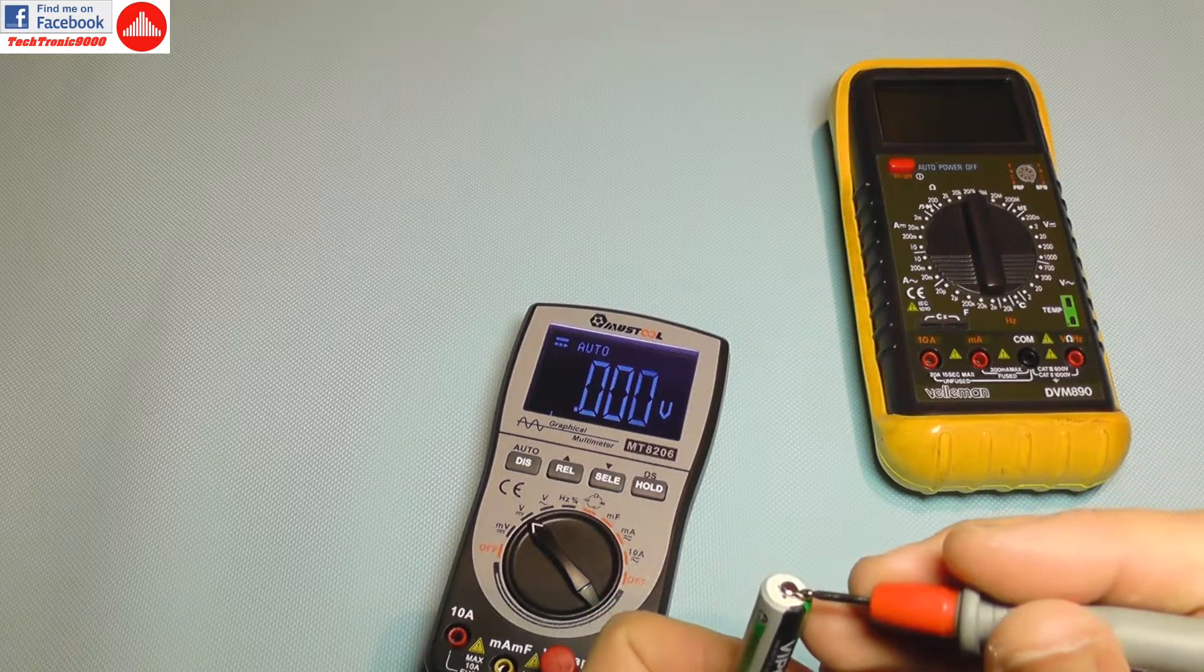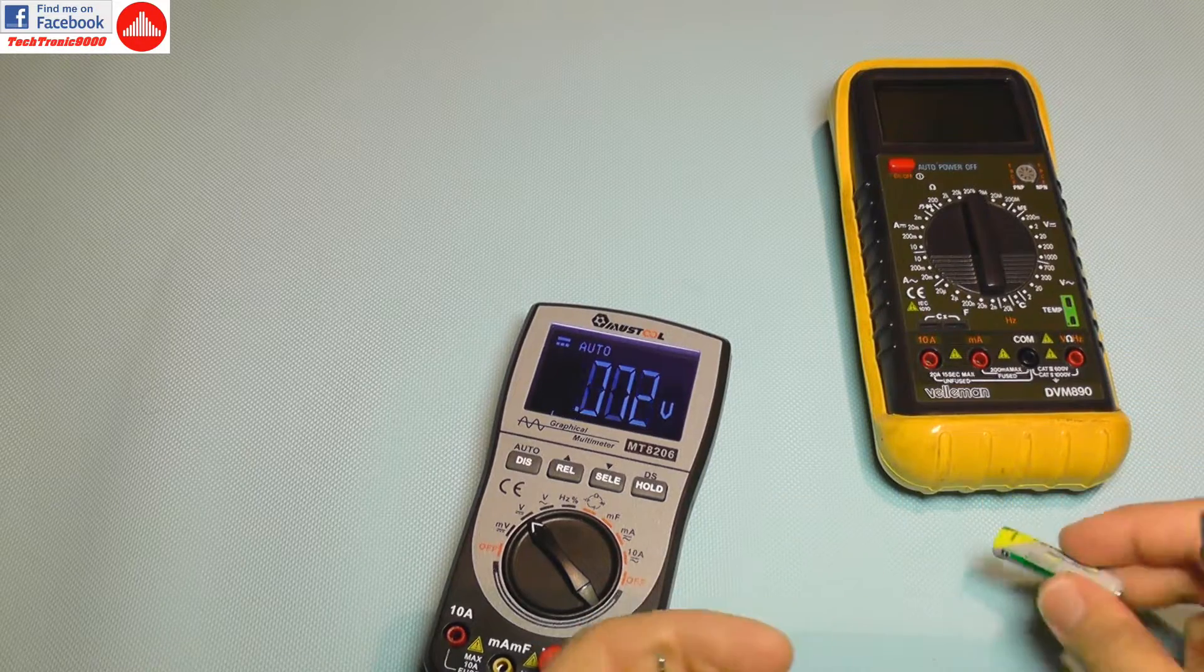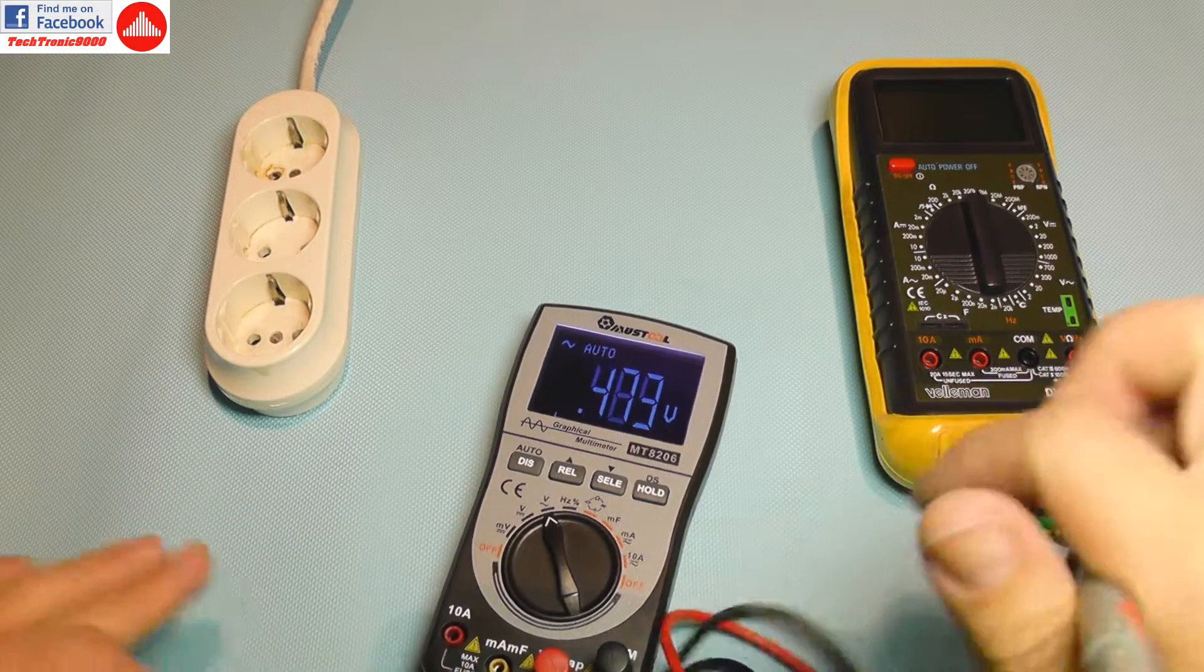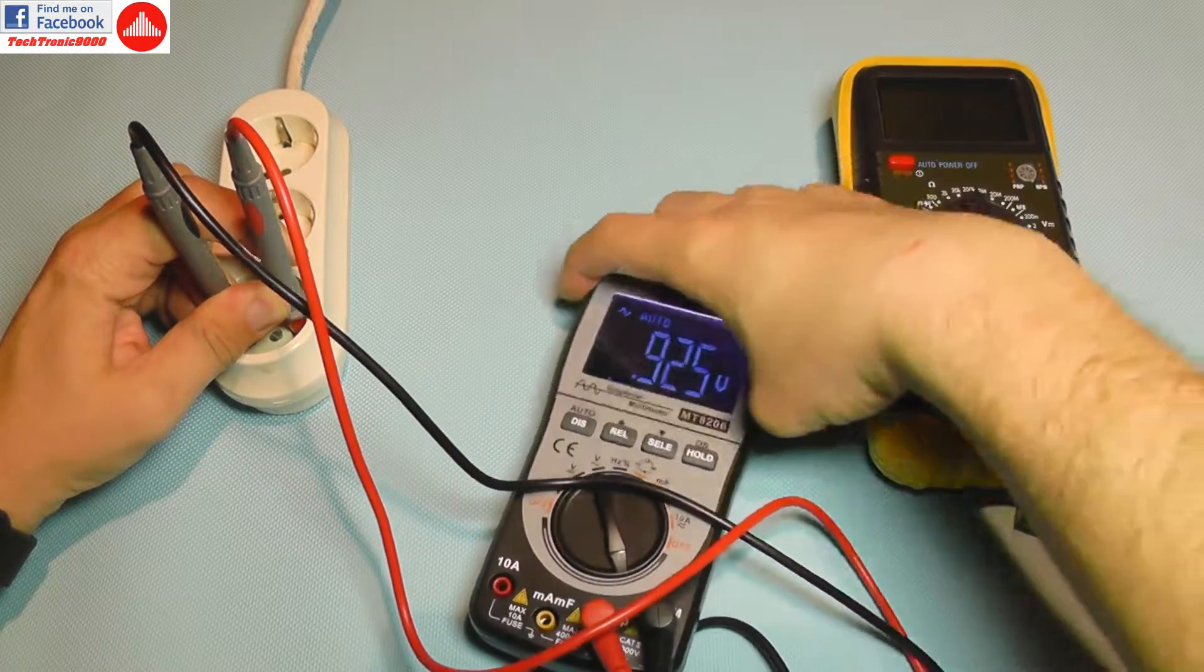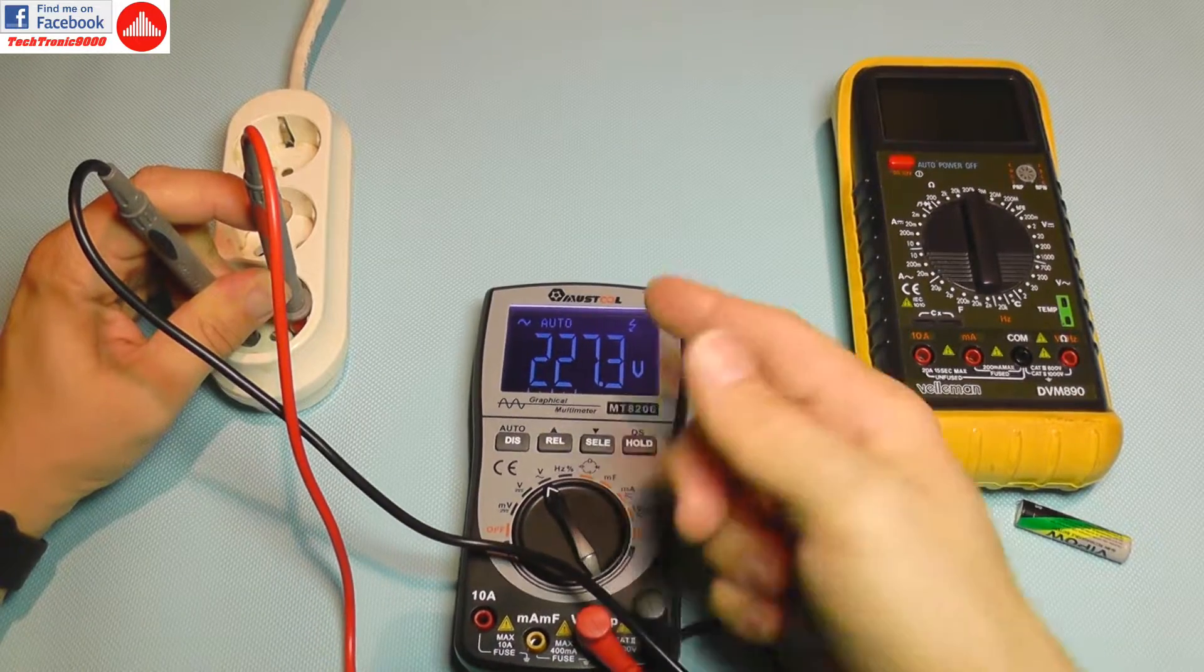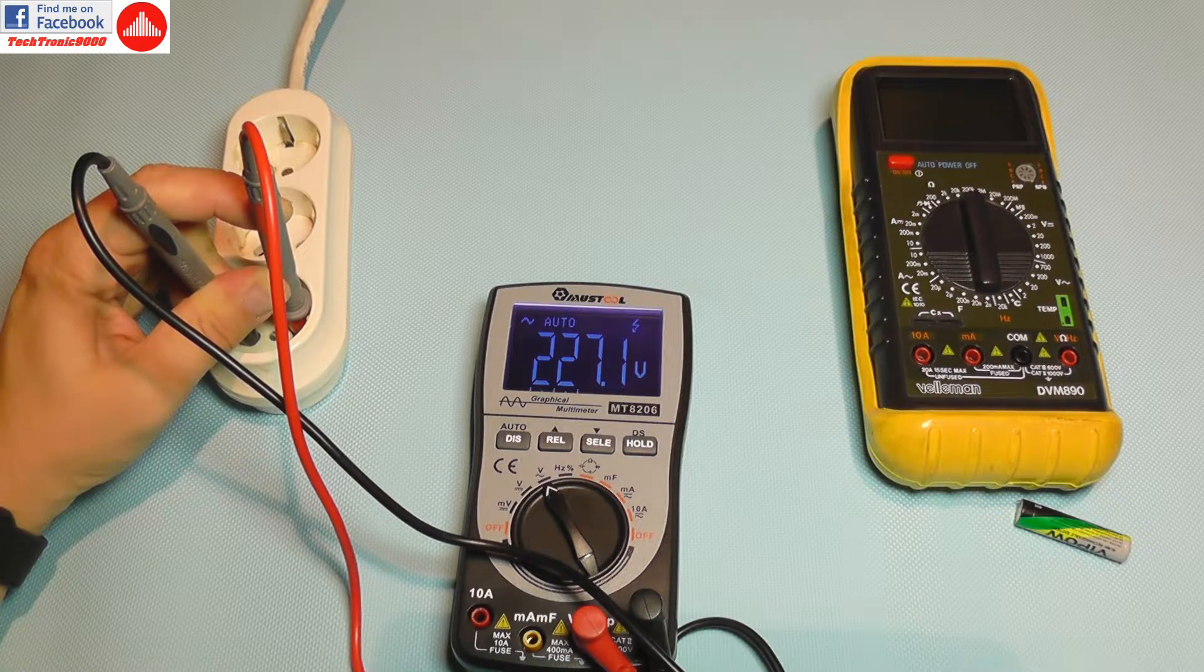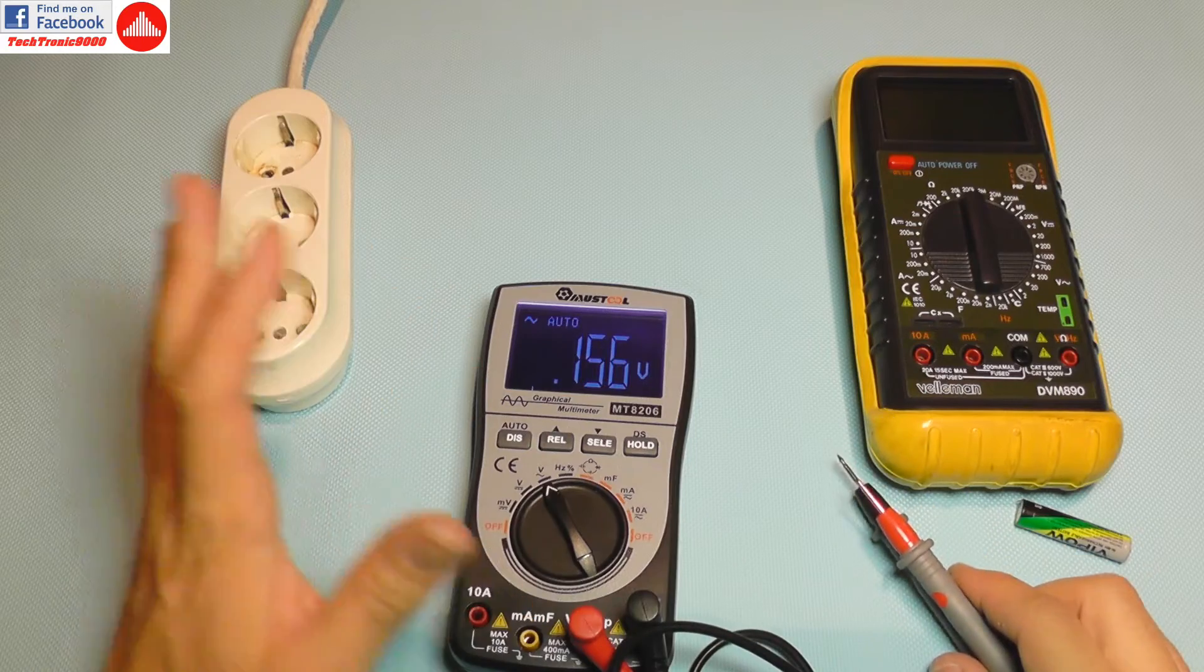Now I'm going to switch it to AC voltage and I'm going to plug this in just like that. It takes a bit and it warns me that it's high voltage. And that's the main voltage right now, 227 volts. So you get the idea, it's a normal voltage meter, tester, multimeter.